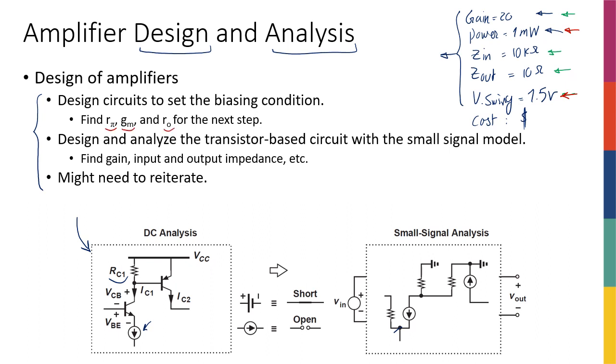And then we know that one thing that comes out of the DC analysis is the small signal parameters: GM, Rpi and R0. Remember GM was IC over VT, IC being the DC current of the transistor. Rpi was beta over GM, R0 was VA over IC, VA being the early voltage and IC being the DC collector current of your transistor.